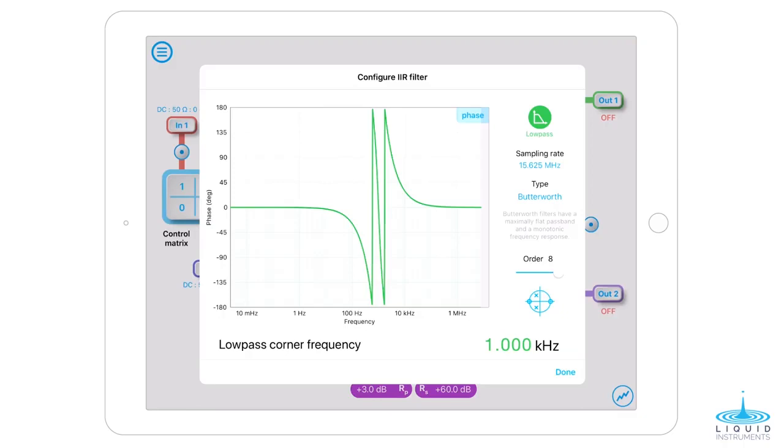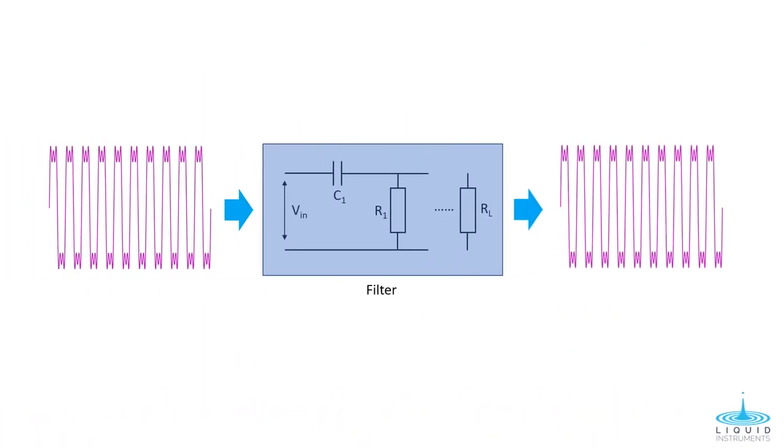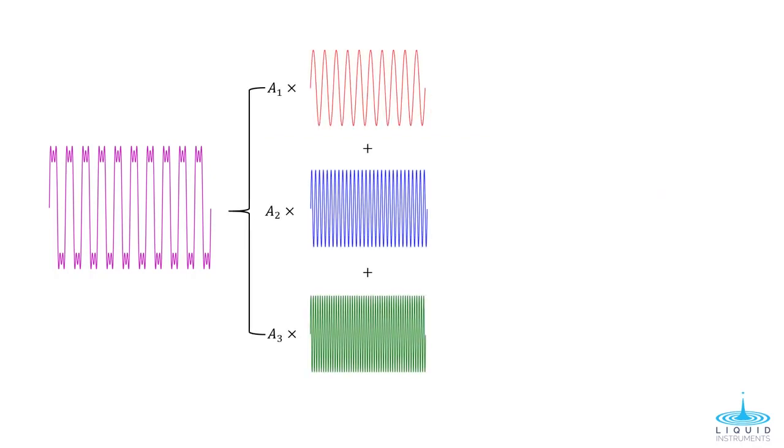Suppose we have this purple waveform and we want this signal to pass through a filter with minimal distortion. Instead of looking at the signal as a whole, we can decompose this signal into three different frequency components at f, 3f, and 5f.